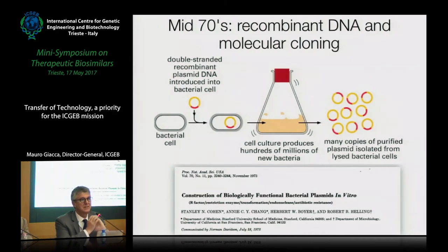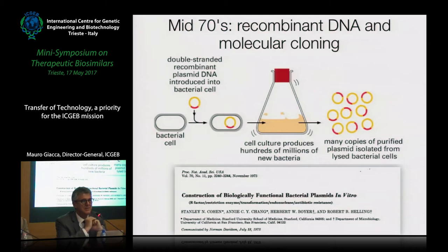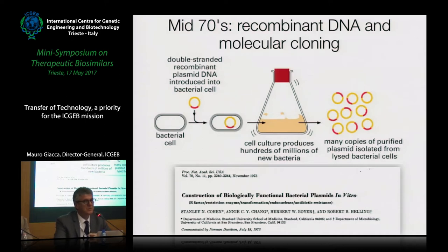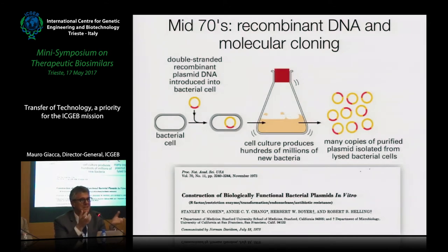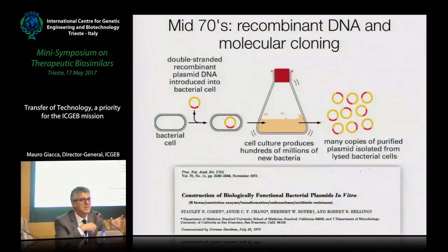Going back more than 30 years ago — about 10 years before the ICGB was conceived — in California, the University of California and Stanford University began to conceive the idea that DNA is the base of genetic information in all living beings on the planet. And if this is the case, you can take a piece of DNA and move it from one organism to another. That was the birth of genetic engineering.